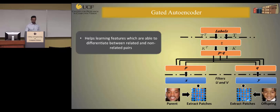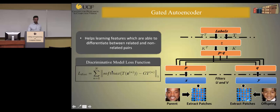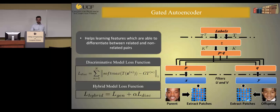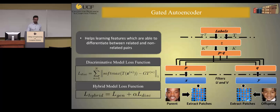The loss function for the discriminative layer minimizes the reconstruction error between the predicted label and the ground truth label with respect to weight T. Given the loss functions for the discriminative and generative layers, we write a final combined loss function using a weighting parameter alpha, which is learned by cross-validation on a validation set.